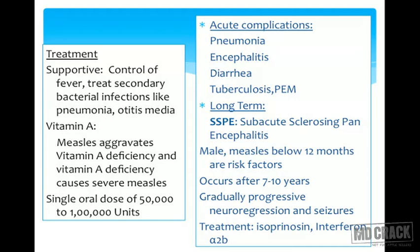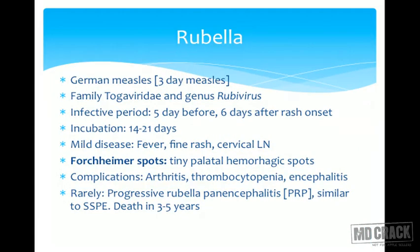Measles lowers immunity, making children prone to tuberculosis. The long-term complication SSPE (subacute sclerosing panencephalitis) is seen 7 to 10 years after infection. Risk factors: infection before 12 months of age and male sex. It presents with gradual deterioration in neurological and cognitive function — disturbance in the day-night pattern, followed by seizures, hypotonia, and death. Treatment is supportive; the two drugs used are inosiplex (isoprinosine) and interferon alpha-2b.